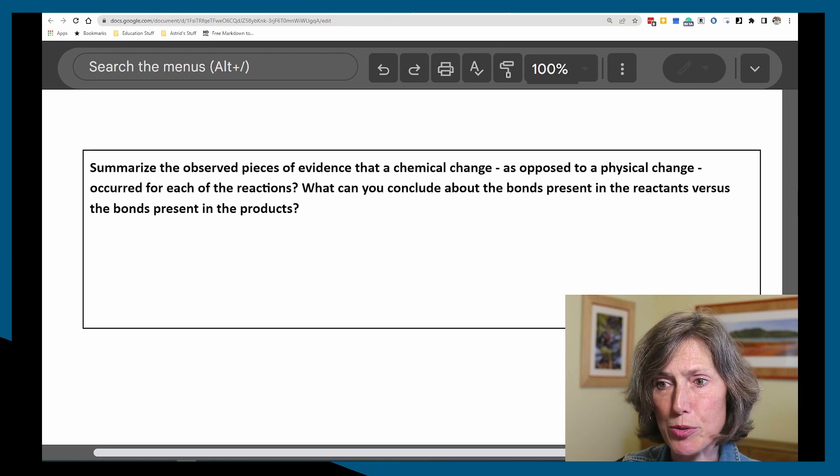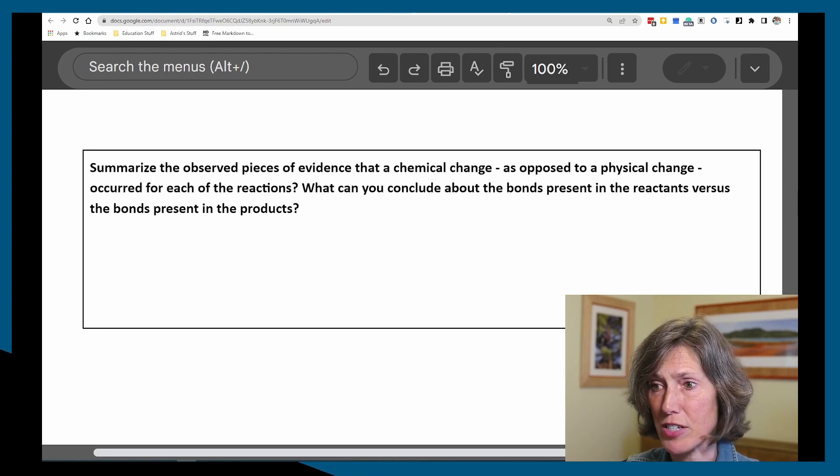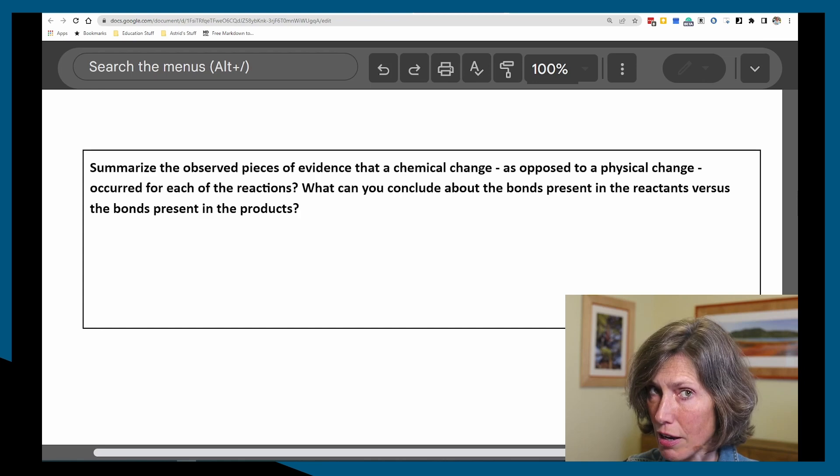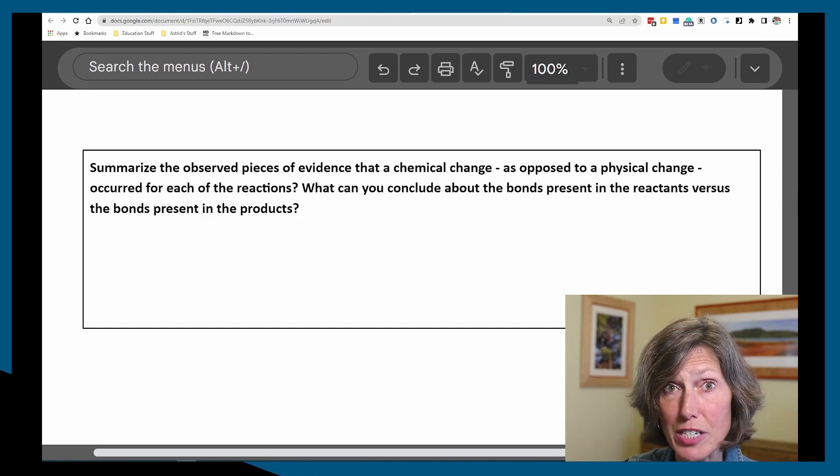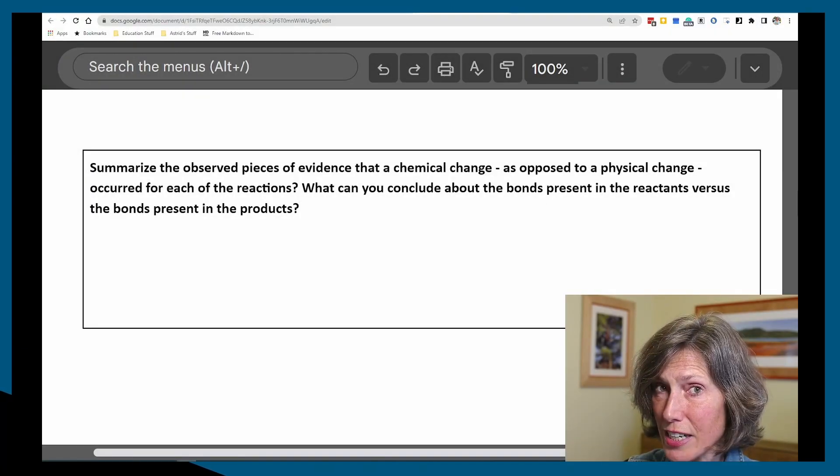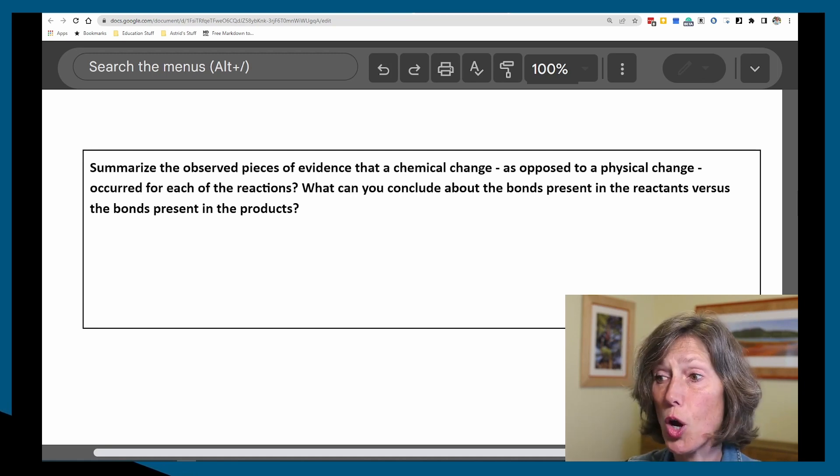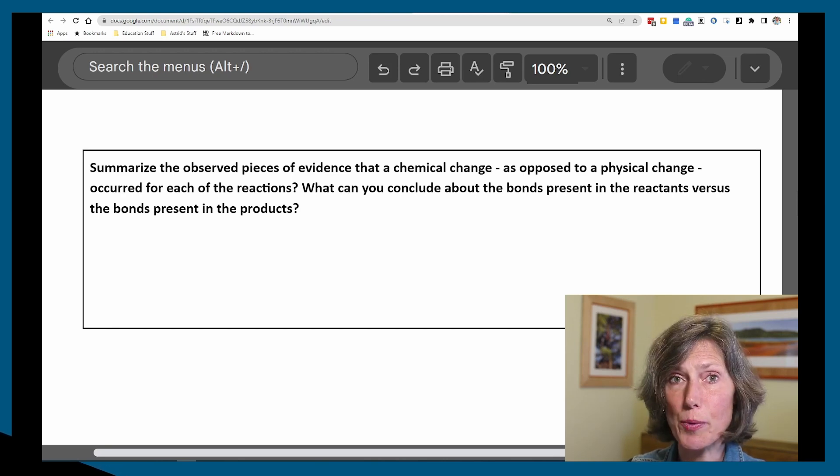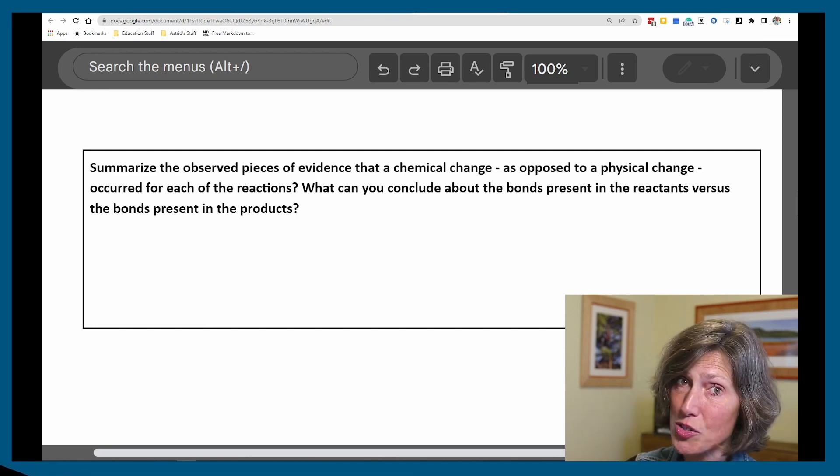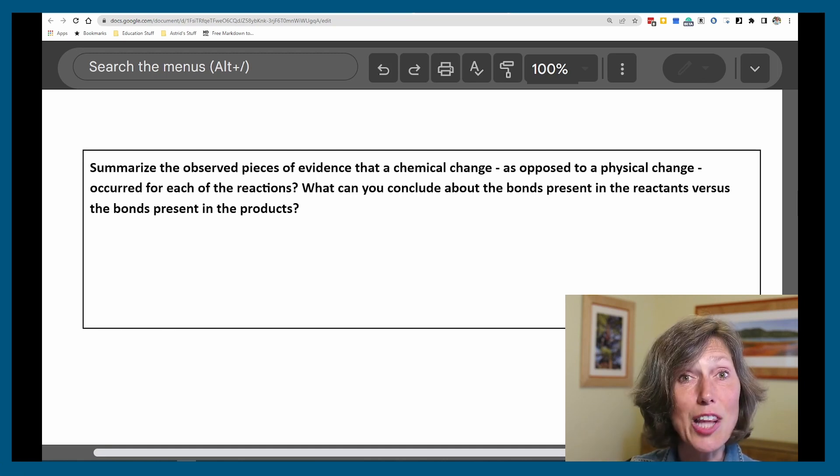As a closure to this lab, I ask my students to summarize their observed pieces of evidence that a chemical change, not a physical change, has occurred in each and every one of these seven, eight reactions. And to reflect again on bonding, whether you've already taught it or you're about to teach it, what can you conclude about the bonds, the connections present in the reactant atoms versus the connections present in the products? Stronger, weaker, exothermic, endothermic, a light bulb into what's coming, or a review.